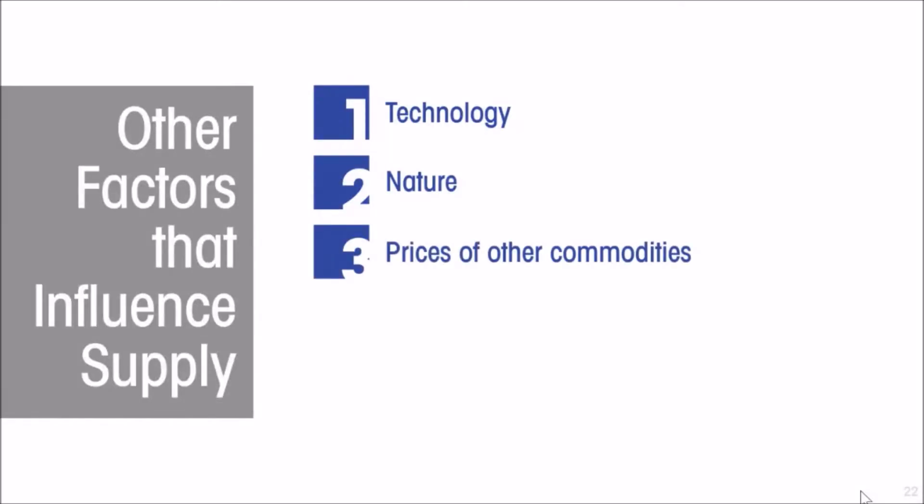The prices of other commodities, for example the prices of potatoes, is going to affect the willingness of farmers to plant carrots. If potato prices go up, they are going to shift their fields, their acreage, from carrots into higher priced potatoes, and the supply of carrots is going to fall.